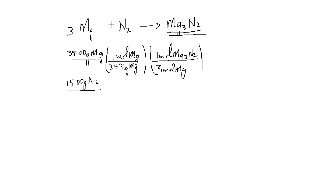So the calculation is: 35.00 divided by 24.31 divided by 3. This works out to be equal to 0.4799 moles of Mg₃N₂.